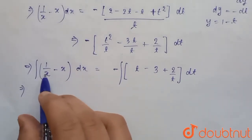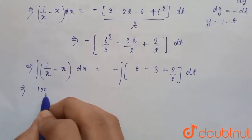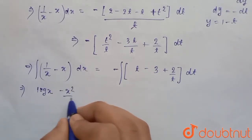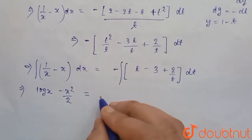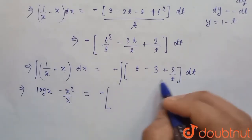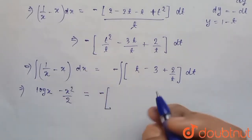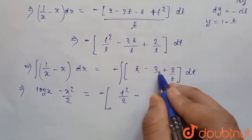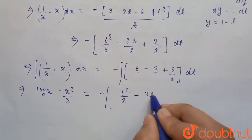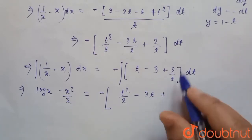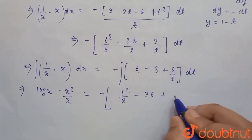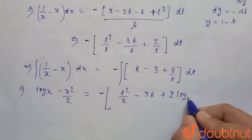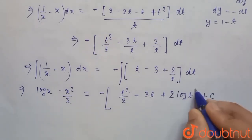We know the integration of 1/x is log x, and integration of x is x²/2. So integrating the left side gives log x - x²/2. The right side integrates to -t²/2 - 3t + 2 log t + c, since integration of 1/t is log t.